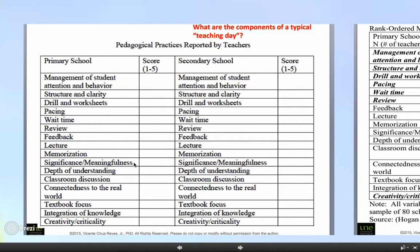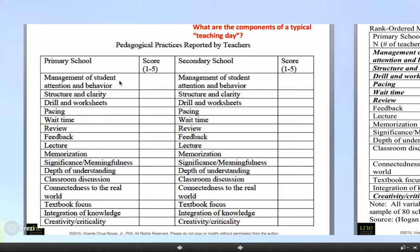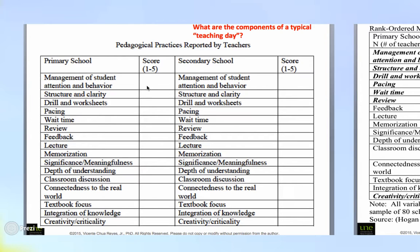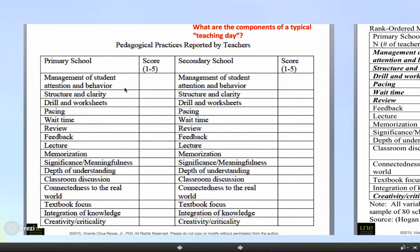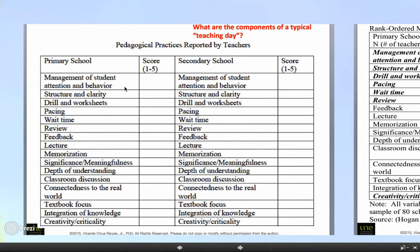What I'd like you to do now, very briefly, is to take a look at each of the pedagogical practices — for example, management of student attention and behavior — and then score it from one to five. One being the practice that is least employed, and five meaning that this is a practice that is widely used in the school, in your experience from what you remember. Try to score from one, lowest, to five, highest — which means this particular practice is employed a lot.